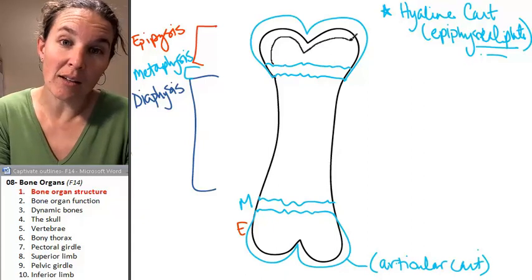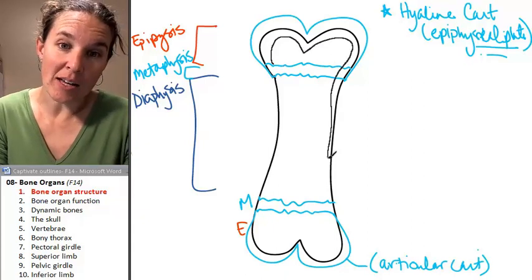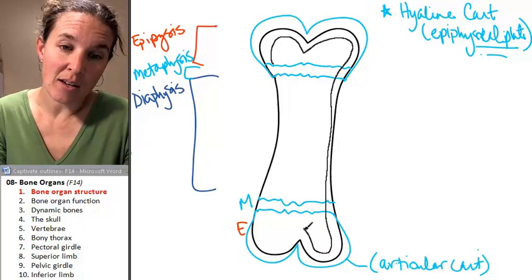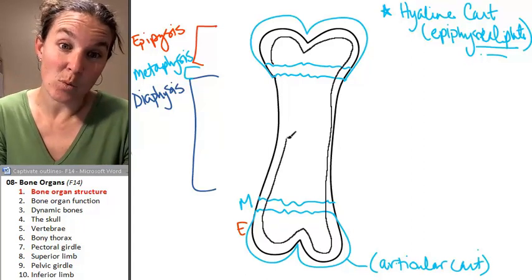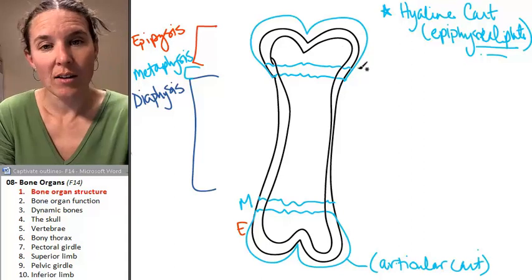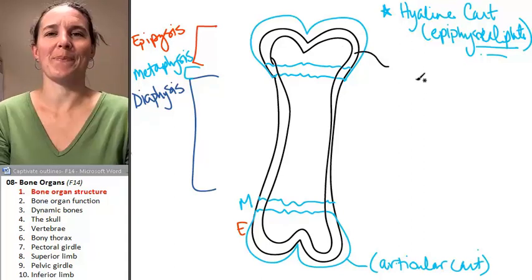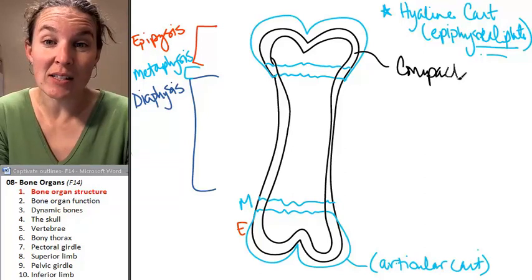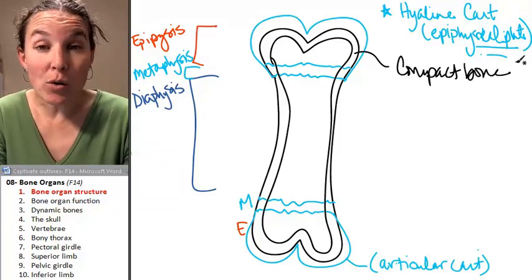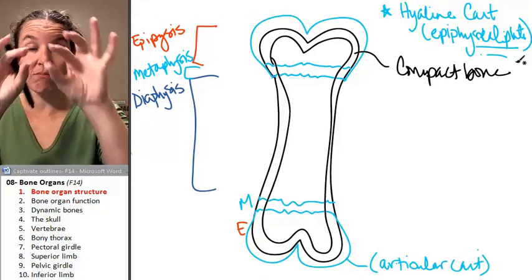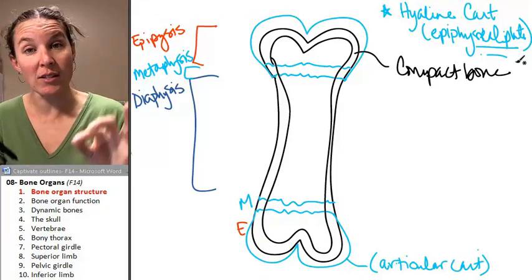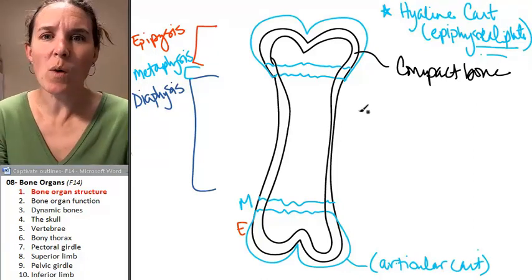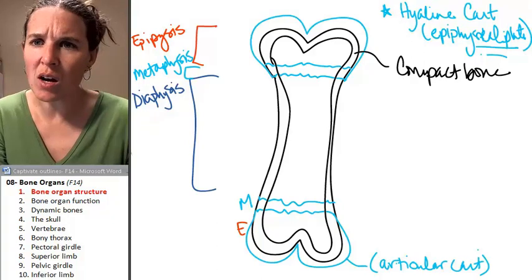So what other kind of tissues do you think we're going to have in our long bone? Well, hopefully, all around the edge here, what do you see? What do you think? What kind of tissue is this? Compact bone, my friends. Most bones have compact bone around the edges.